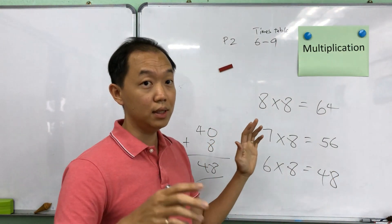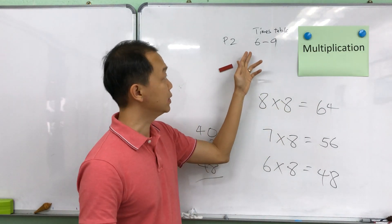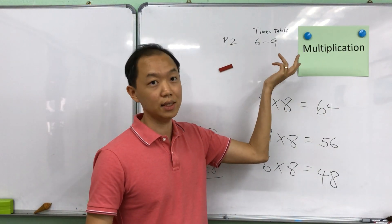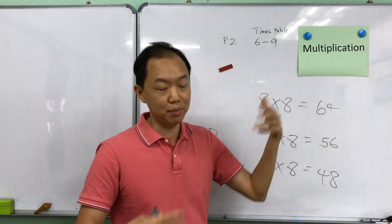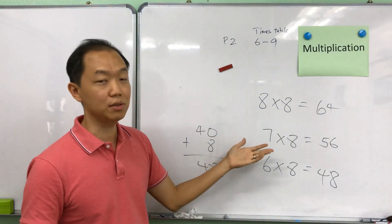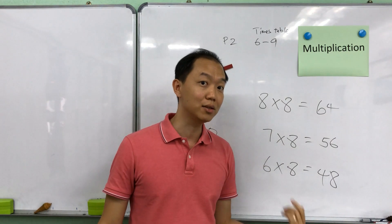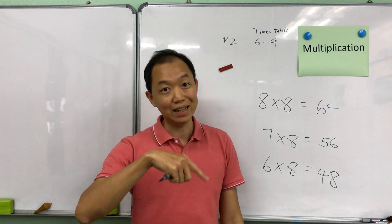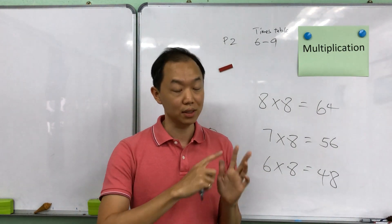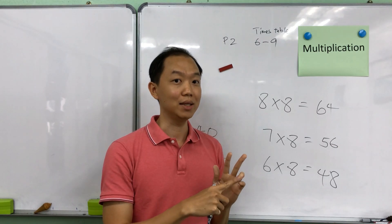So this method is good for the 6 to 9 or 6 to 8 bigger number times table. If you have a smaller number, you will refer back to the P1 method of doing line counting or even the finger tapping method.